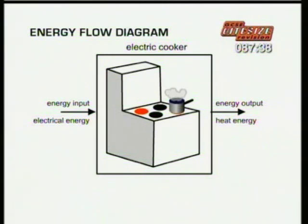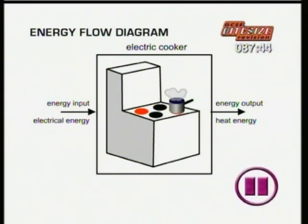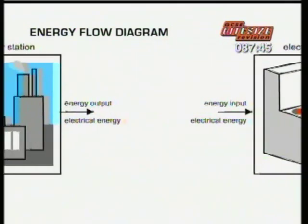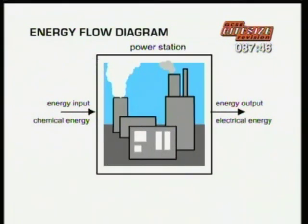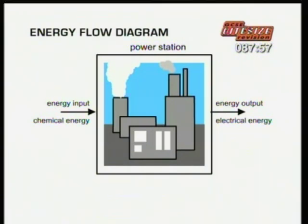What comes before the electric cooker? The energy conversion process that produces the electricity for the cooker is the power station. It uses chemical energy from coal, oil, gas or nuclear energy, or the power of falling water.